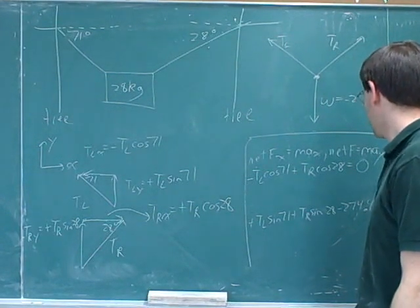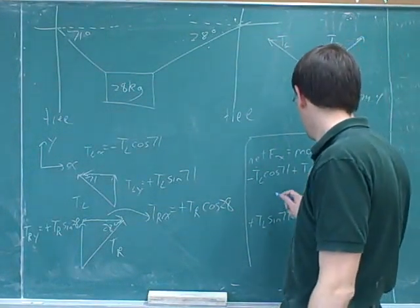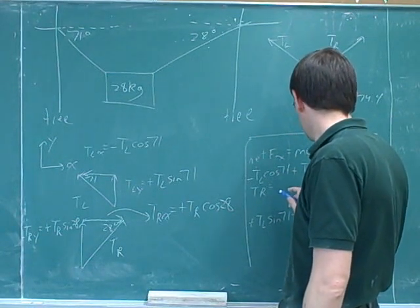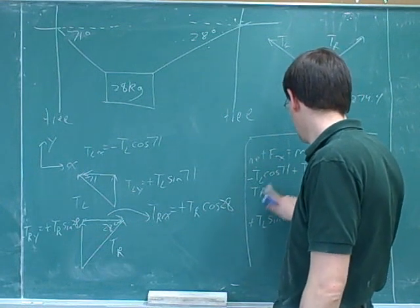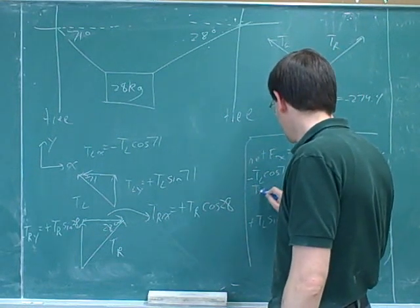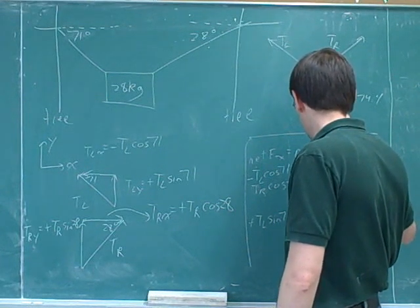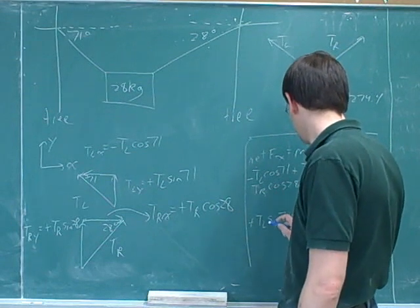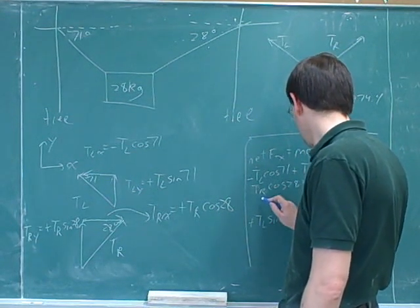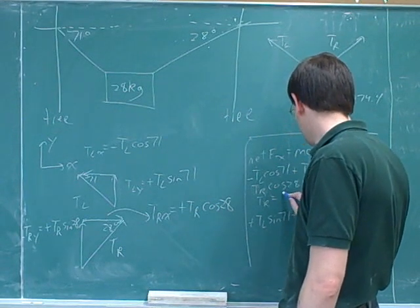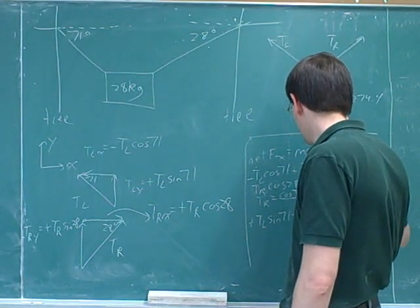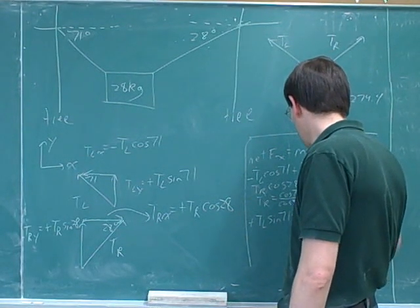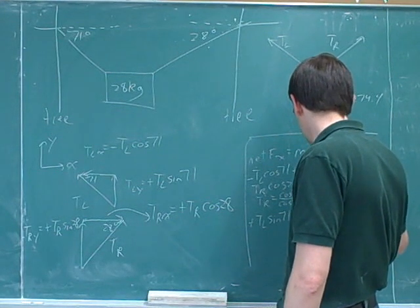All right. Yeah. Now we do have to solve for one of the variables here. Well, I could solve this and get that Tr is equal to... All right. We get Tr cosine 28 equals Tl cosine 71. Divide by cosine 28. So Tr is equal to cosine 71 over cosine 28 times Tl.